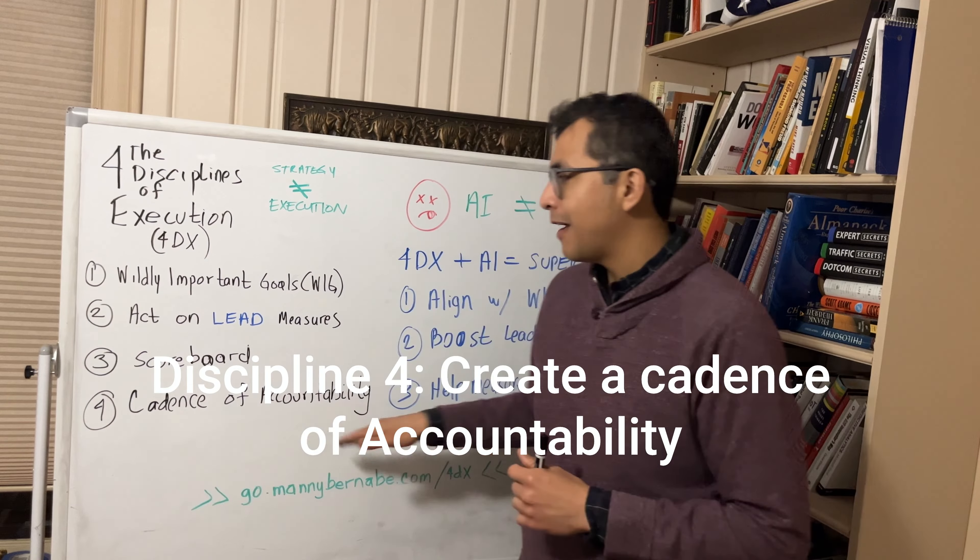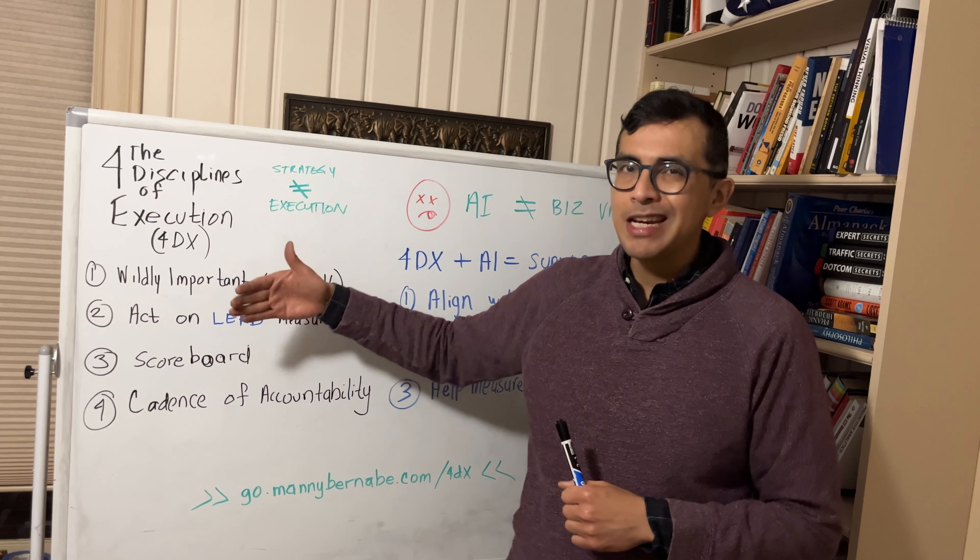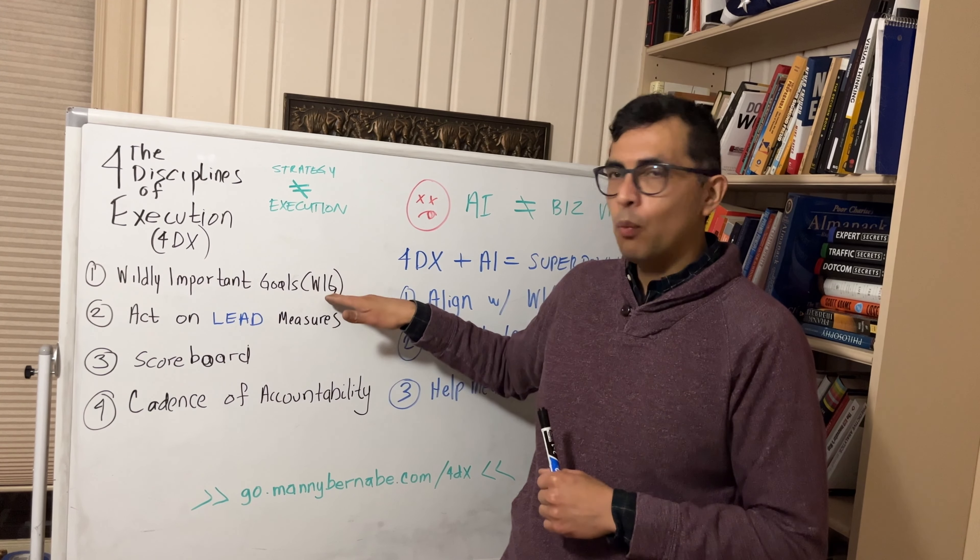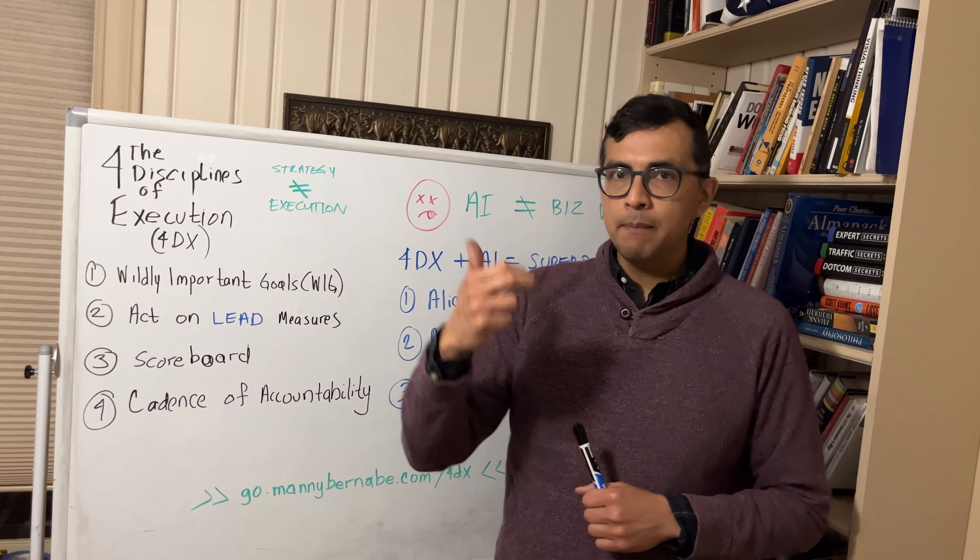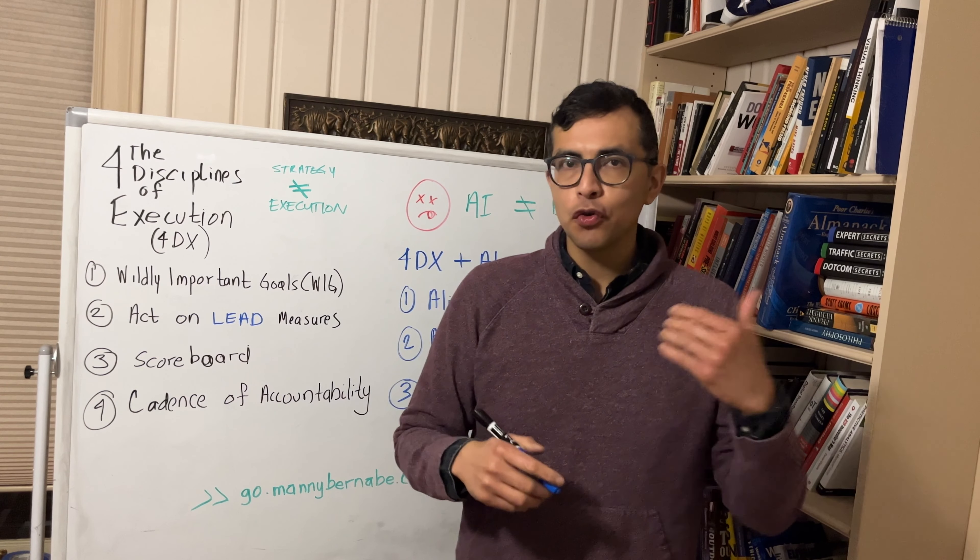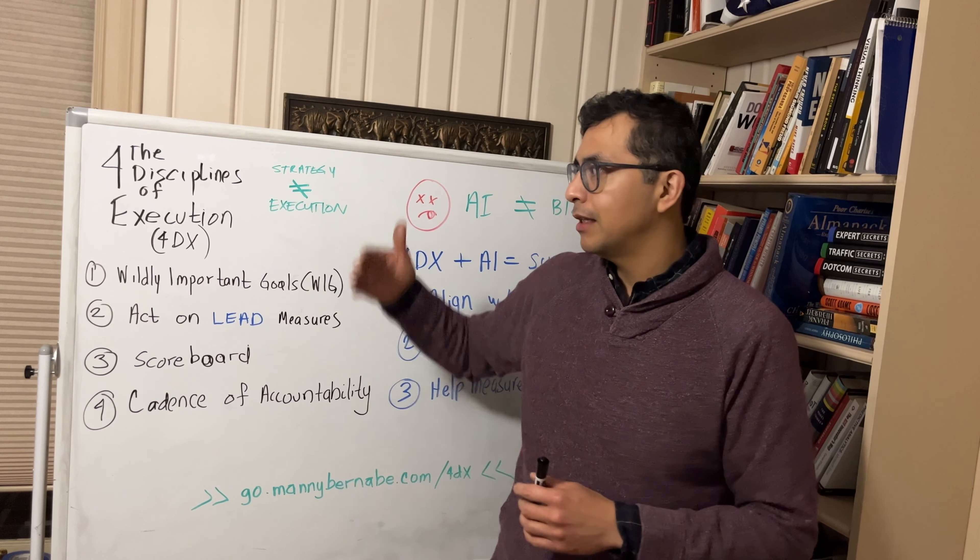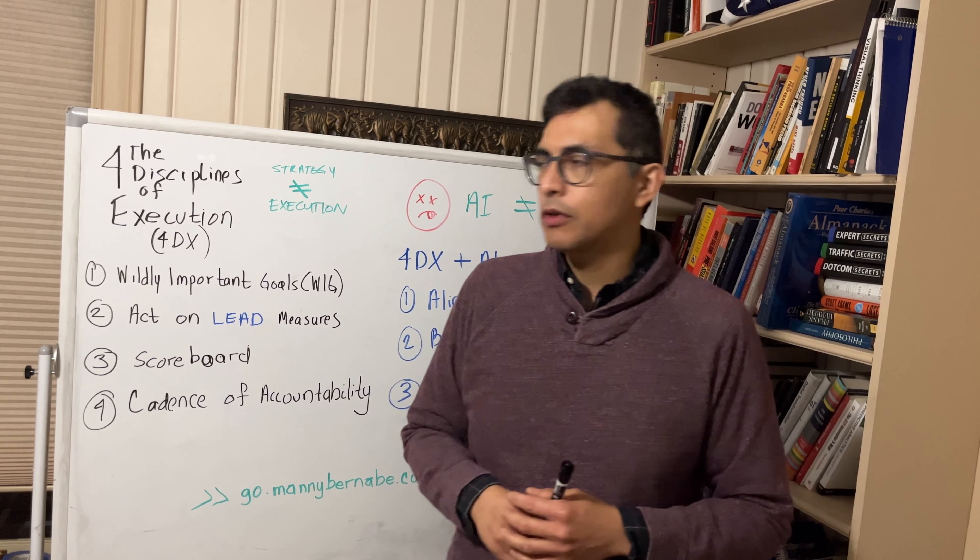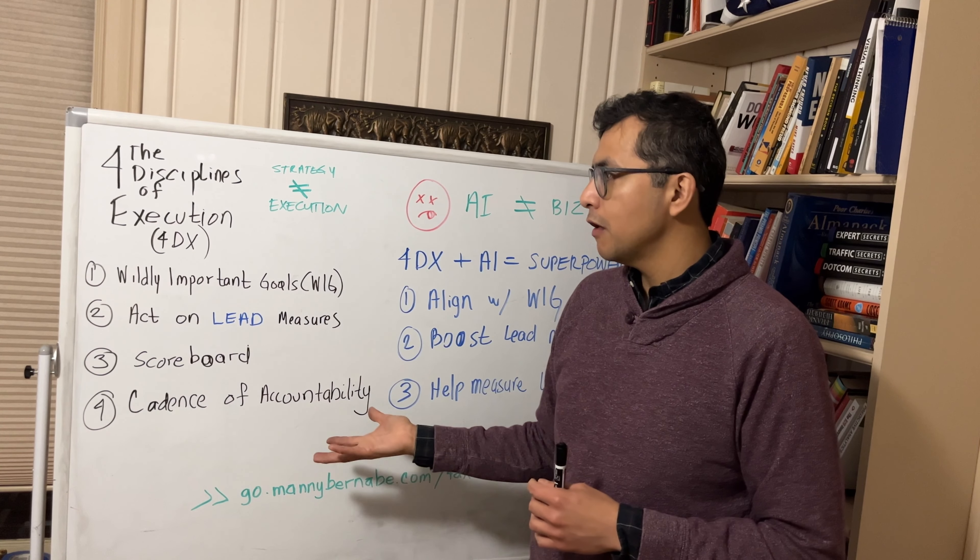And then discipline number four is having a cadence of accountability. So making this a regular practice, you're meeting weekly and you're reviewing your progress towards your WIG, you're reviewing your lag metrics, your lead metrics, you're making commitments to the team in terms of what you're going to do to help drive performance. And that becomes a habit and a discipline that you instill within your team.